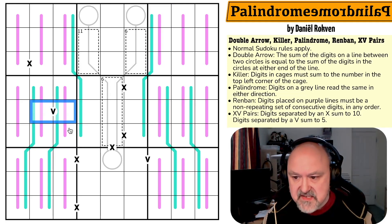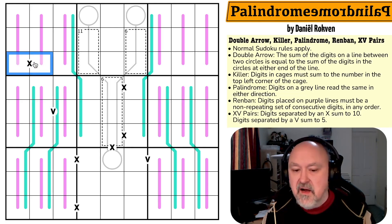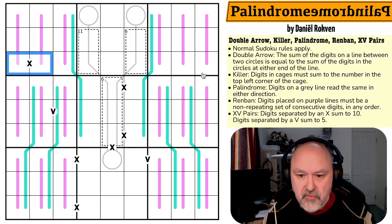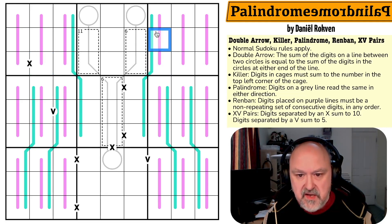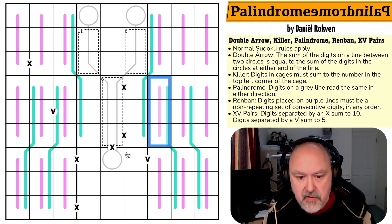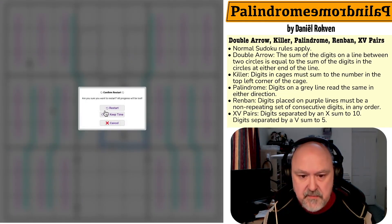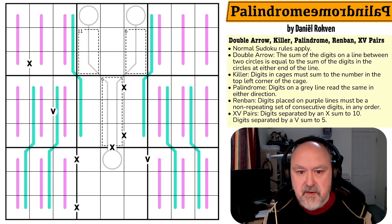We have XV pairs: cells separated by a V sum to five, cells separated by an X sum to ten. Not all X's and V's are given — meaning not all renban lines are given, not all palindromes are given, and not all X's or V's are given. I'm going to restart the puzzle to reset my timer. Let's give this a shot.